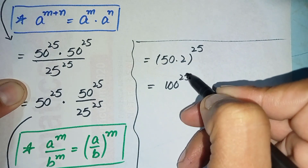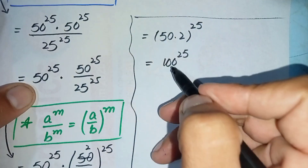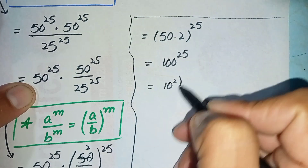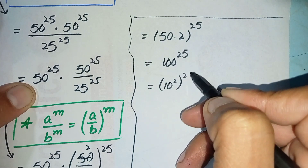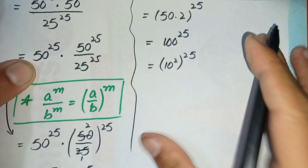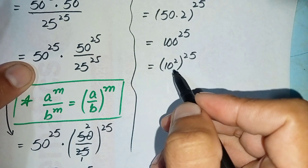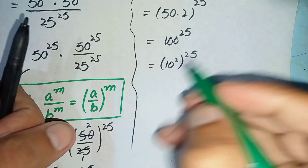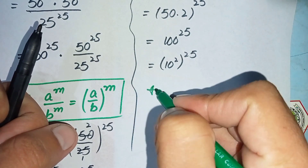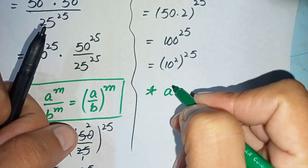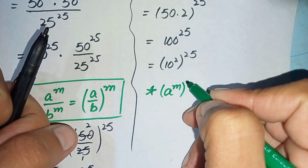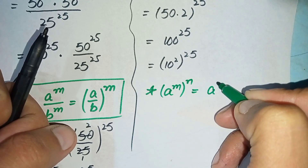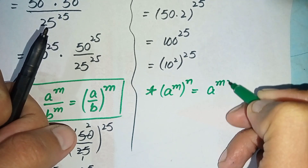Next, we can write 100 as 10 raised to the power 2, whole raised to the power 25. Here we again use the exponential formula: a raised to power m, whole raised to power n, is equal to a raised to power (m times n).